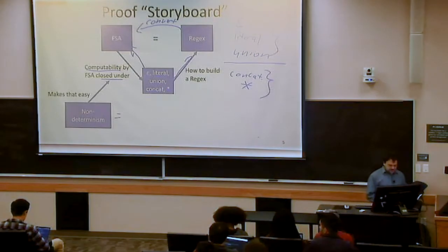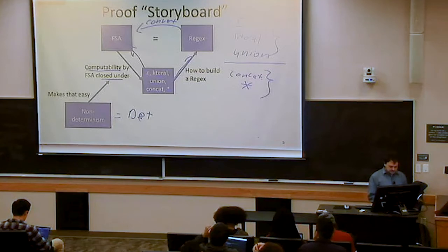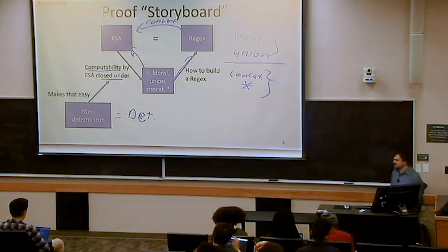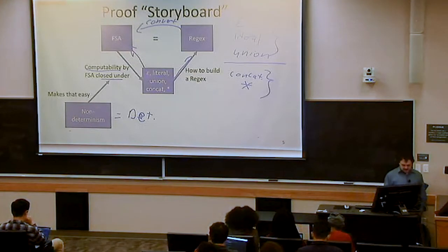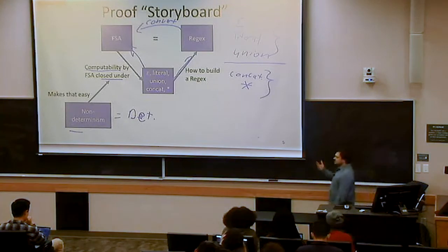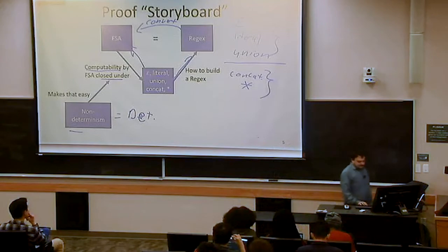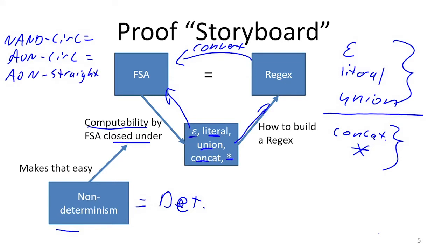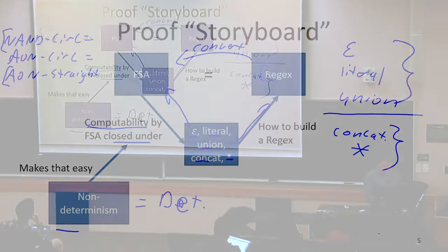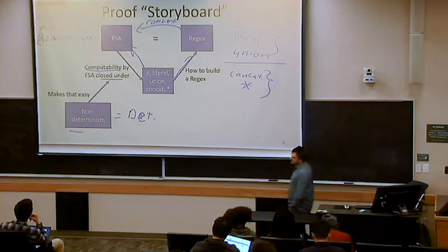A non-deterministic machine is equivalent in power to a deterministic one. So if I can show that I can convert any regular expression to a non-deterministic machine, I could convert that non-deterministic machine into a deterministic one. This is similar to how we showed NAND circuits were equal to AND-OR-NOT circuits, which were equal to AND-OR-NOT straight-line programs — since equivalence is transitive, we can conclude all three are equivalent.